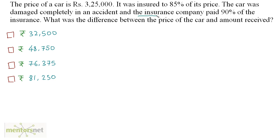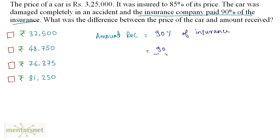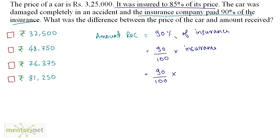The insurance company paid 90% of the insurance, so the amount received is equal to 90% of the insurance, which is 90/100 times the insurance. Now, from the statement, it was insured to 85% of its price, so this equals 90/100 times 85% of the price of the car.